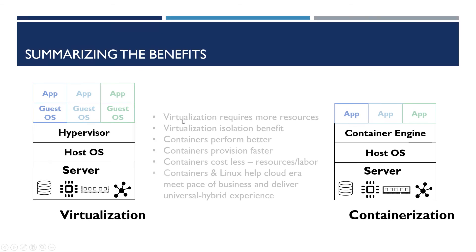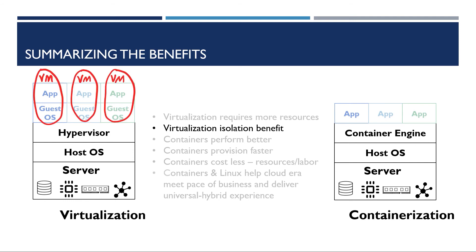Now let's look into the benefits and trade-offs. First, virtualization requires more resources — with every VM comes that guest OS. That extra overhead for each application adds up quickly when virtualizing just a few applications. On the other hand, virtualization isolation is a benefit. Each operating system is within its own VM, providing simpler security. One comparison cited four or five security surface points for VMs versus 367 for containers, making VM isolation easier to secure — though not necessarily providing better security overall, just easier.